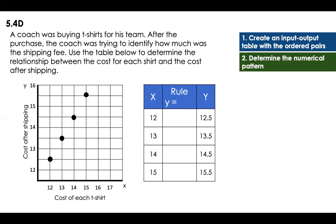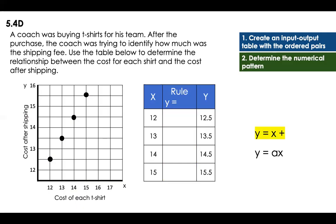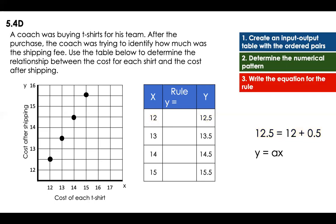Now we have to determine the numerical pattern. It's going to go in the middle of this input-output table. It could be y equals x plus something, or y equals a times x. So let's start with addition first. Y — that is 12.50 — is equal to x — that is 12 — plus what? Yes, plus 5.10.